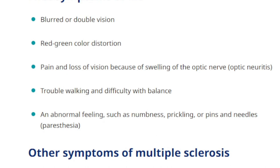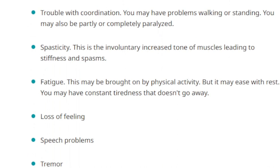The first symptom is blurred or double vision. My mother has double vision in both eyes in different directions — I'll explain that more at the end. Other visual symptoms include color distortion, pain or loss of vision because of swelling in the optic nerve. Additional symptoms include trouble walking, difficulty with balance, and abnormal feelings such as numbness, prickling, pain, or pins and needles.